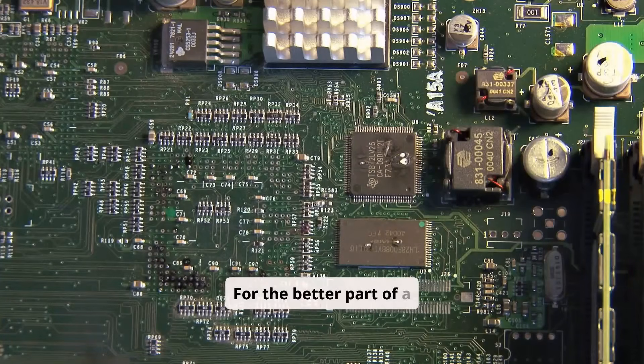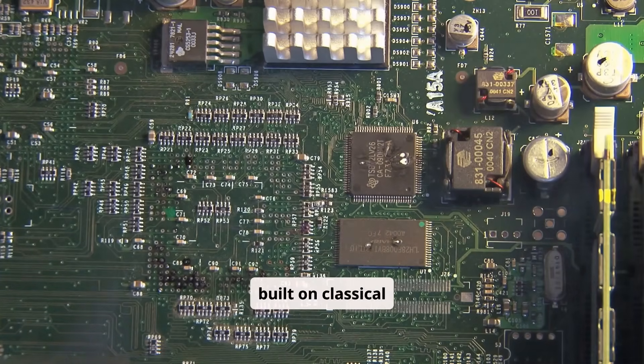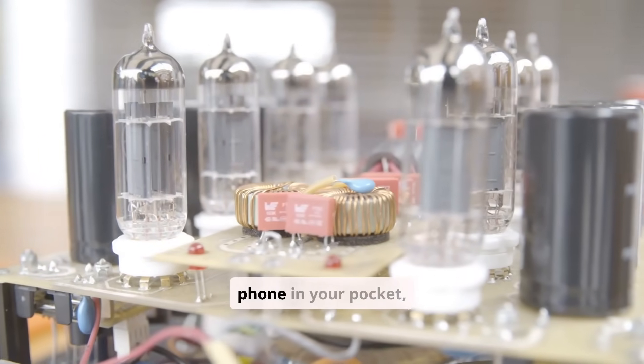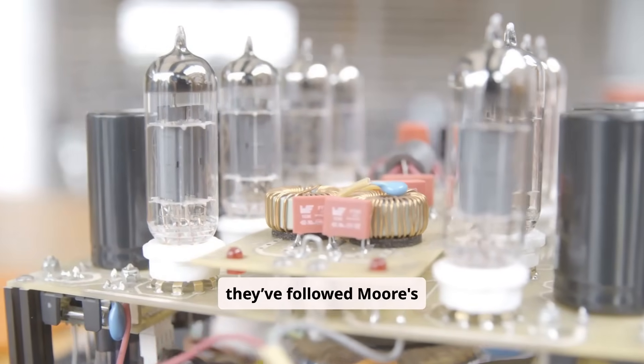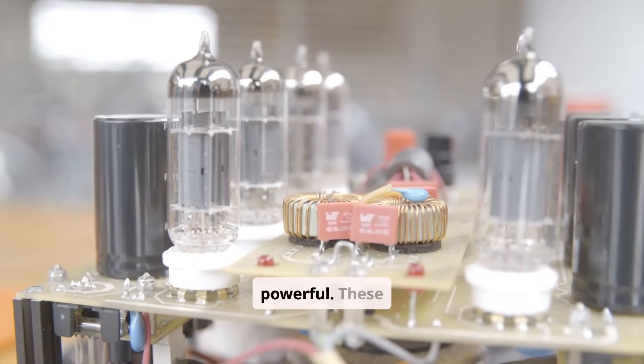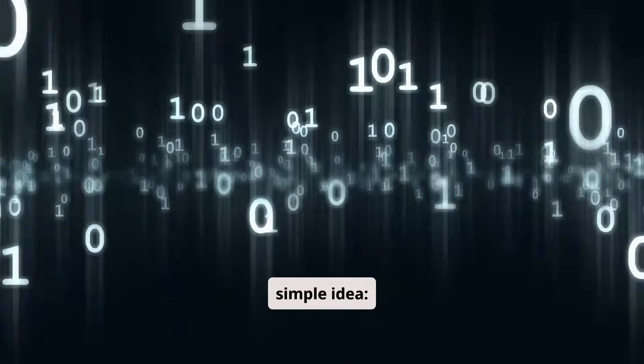For the better part of a century, our world has been built on classical computers. From giant vacuum tubes to the phone in your pocket, they've followed Moore's law, getting smaller, faster, and more powerful.